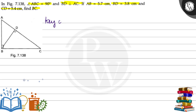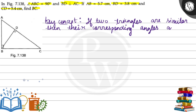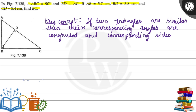The key concept is: if two triangles are similar, then their corresponding angles are congruent and corresponding sides are in equal proportion.